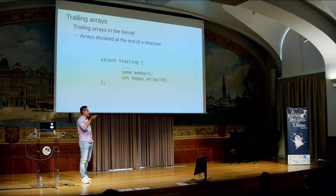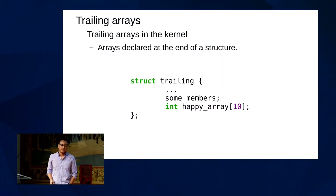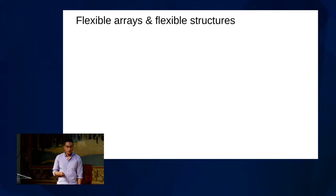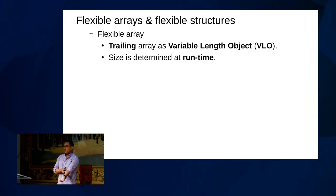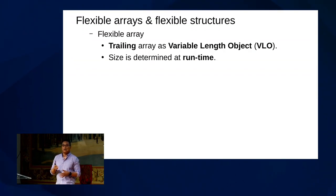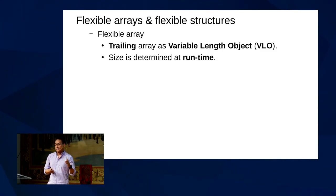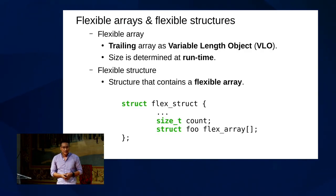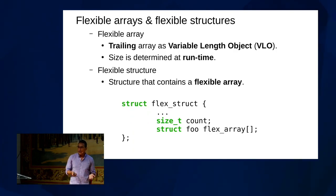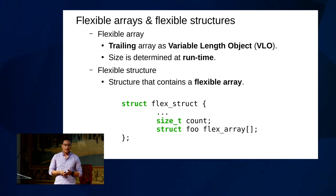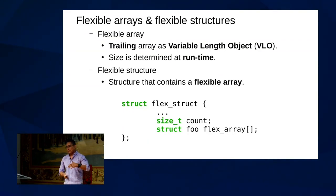A trailing array is merely an array that is at the end of a structure. In this case, we have happy array as a trailing array because it is at the bottom of a struct trailing. Sometimes we don't know the total size of our arrays at compile time, so we need to use variable-length objects. We can't declare those objects with a fixed size — their size is going to be determined at runtime.